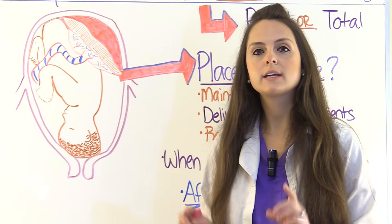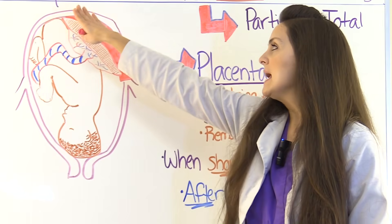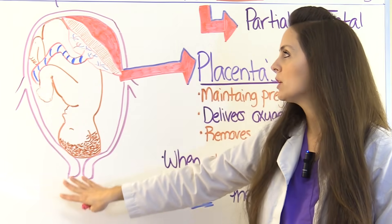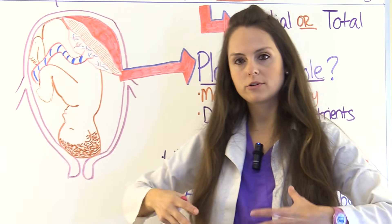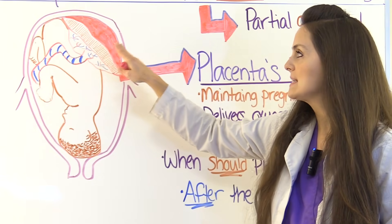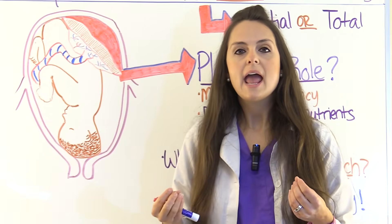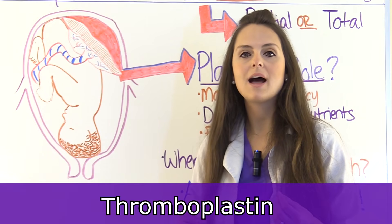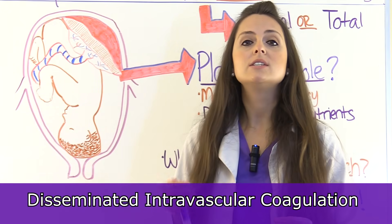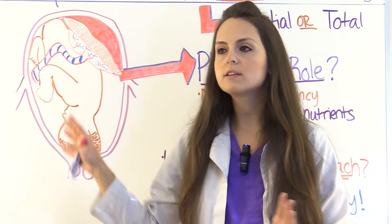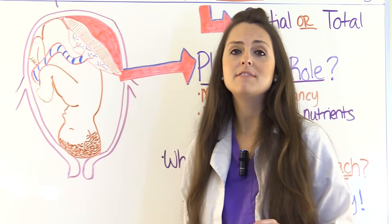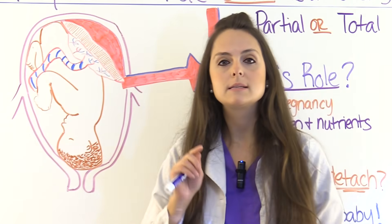When this placenta comes off the uterine wall, you want to monitor the patient for concealed bleeding, because it can stay inside the uterus and not come out vaginally like it can with placenta previa. So it's really important to monitor the fundal height — is the uterus increasing when it shouldn't? — and the abdominal girth. The damaged placenta can also release large amounts of thromboplastin into mom's circulation, which can trigger DIC — disseminated intravascular coagulation.